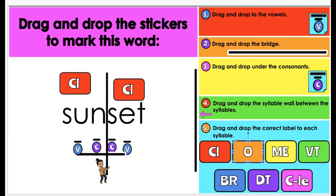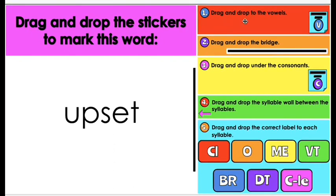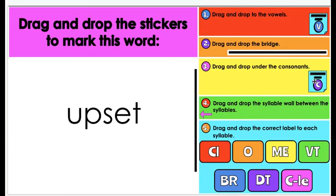All right? I want to try one more. Actually, we're going to try one more together. So in a minute, you'll be on this slide. And we have the word upset. Together, we will practice. We will drag and drop our vowels, drop our bridge, drag our consonants, put our syllable wall up, and label if they're open and closed syllables. Thanks very much. So we'll take you to the next slide. Thanks.